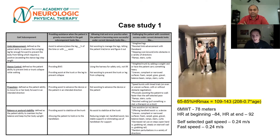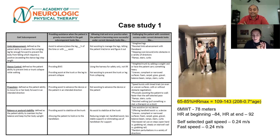Her heart rate ranges will be a little bit higher than the first gentleman's just because she is younger. If anybody is looking to calculate this, there's a very helpful calculator on the APTA's website where you can plug in their age, their resting heart rate, and whether they're on beta blockers or not.